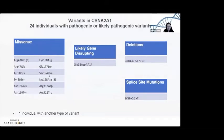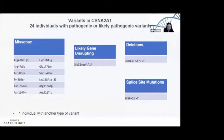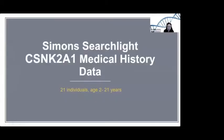Changes in the gene are not random but are particularly concentrated in areas we think are especially critical to how the gene functions. We also know there are changes that essentially take out one of the two copies of the gene — either a deletion or other disruptions. At this point, we don't know if the condition is milder or more severe based on the specific underlying change, so for now I've put everyone together in one group.